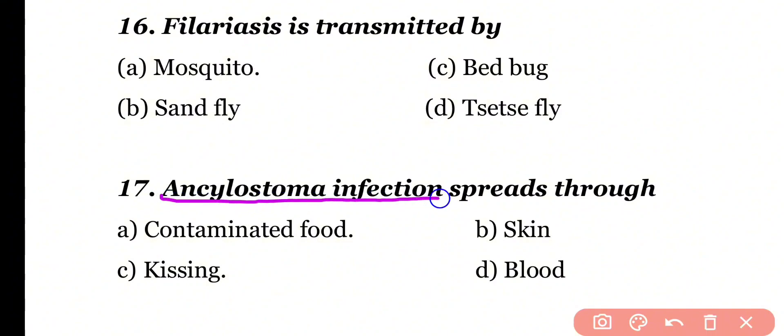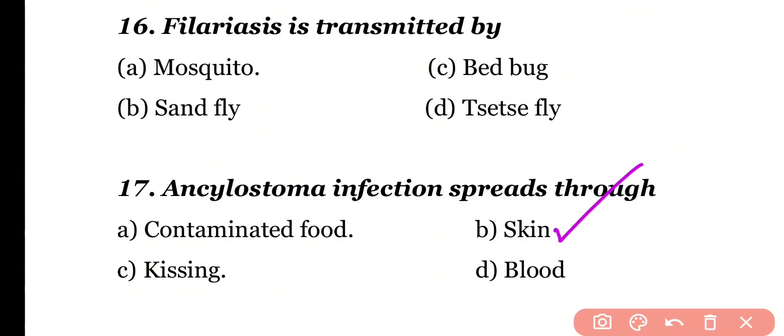Question 17: Ancylostoma infections spread through contaminated food, skin, kissing, or blood. Correct answer is option B. Ancylostoma infections spread through the skin — Ancylostoma larvae penetrate the skin and cause disease.